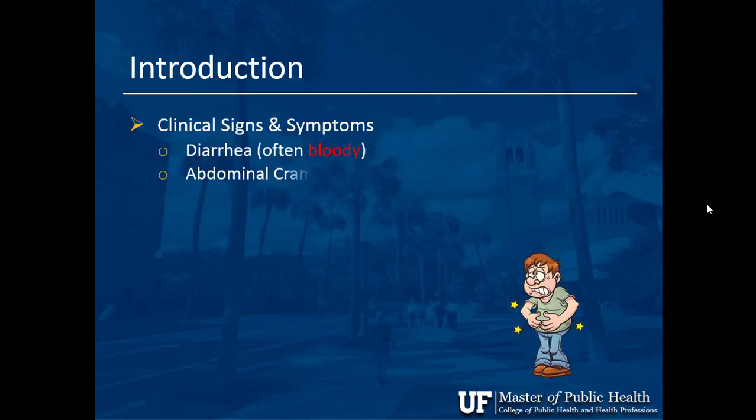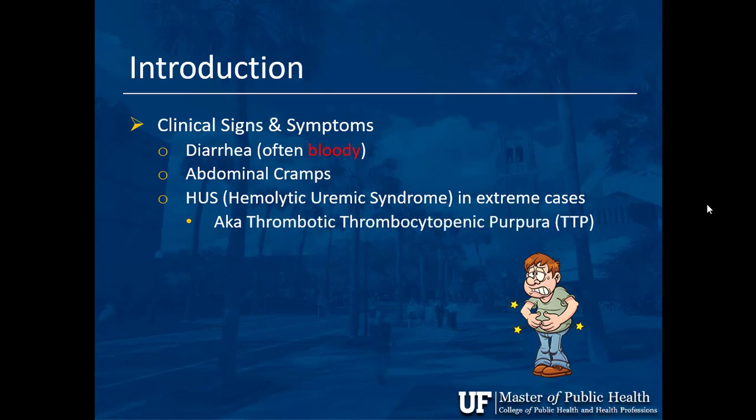Signs are things you can measure; symptoms are conditions the patient presents with. One of the key symptoms is diarrhea, and it is often bloody — that's why it's called hemorrhagic, meaning bloodiness. Usually diarrhea comes with abdominal cramps, though that's not a necessary component of the diagnosis.